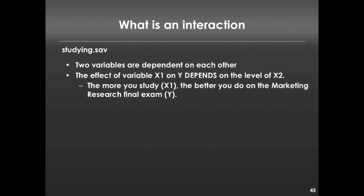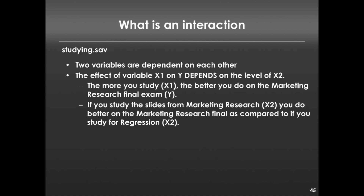In this dataset, I make the following contention: the more you study — that'll be our x1 — the better you might do on the marketing research final exam, which is the outcome. We have another variable, which is whether you choose to study for marketing research or choose to study for a different but related class, we'll call it regression. In general, regardless of what you study, you'll do better on the final exam. But if you study the slides for marketing research, you'll do better on the marketing research final as compared to if you studied for regression. In other words, studying for the right exam is more effective than studying for another but perhaps related exam.